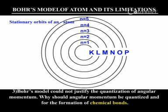Bohr's model could not justify the quantization of angular momentum. Why should angular momentum be quantized and equal to Nh by 2π, where N is equal to 1, 2, 3 and so on.